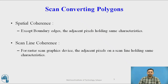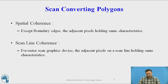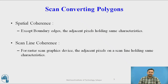We will start with the topic of scan converting polygons. There are two concepts: spatial coherence and scanline coherence. Spatial coherence means that, except at the boundary edges, all adjacent pixels within a certain area of an image have the same color. So instead of saving the color value for each and every pixel, we can store it combined. That concept has already been covered in the image compression topic.